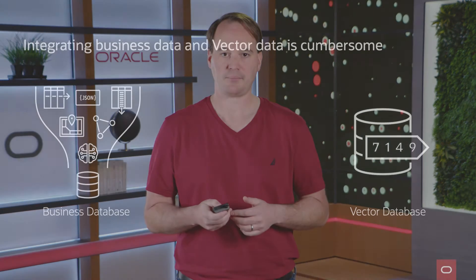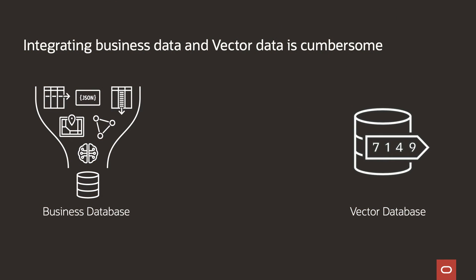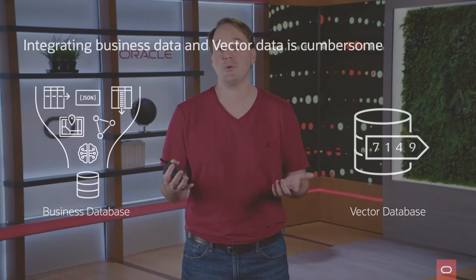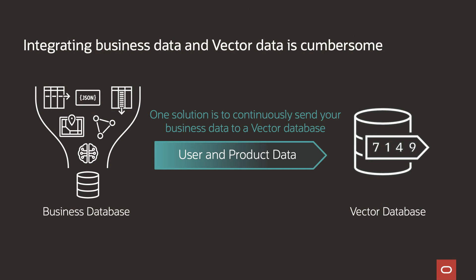So how do we bring business data and vector data together? Single-purpose vector databases take a snapshot of your business data, vectorize it, and then do similarity search on the business data and other vector data. It is up to you to keep the business data in sync in that vector database. This is important because your business data can change — for example, your budget may go up or down. You end up continuously sending snapshots of your business data to a vector database to keep it in sync.